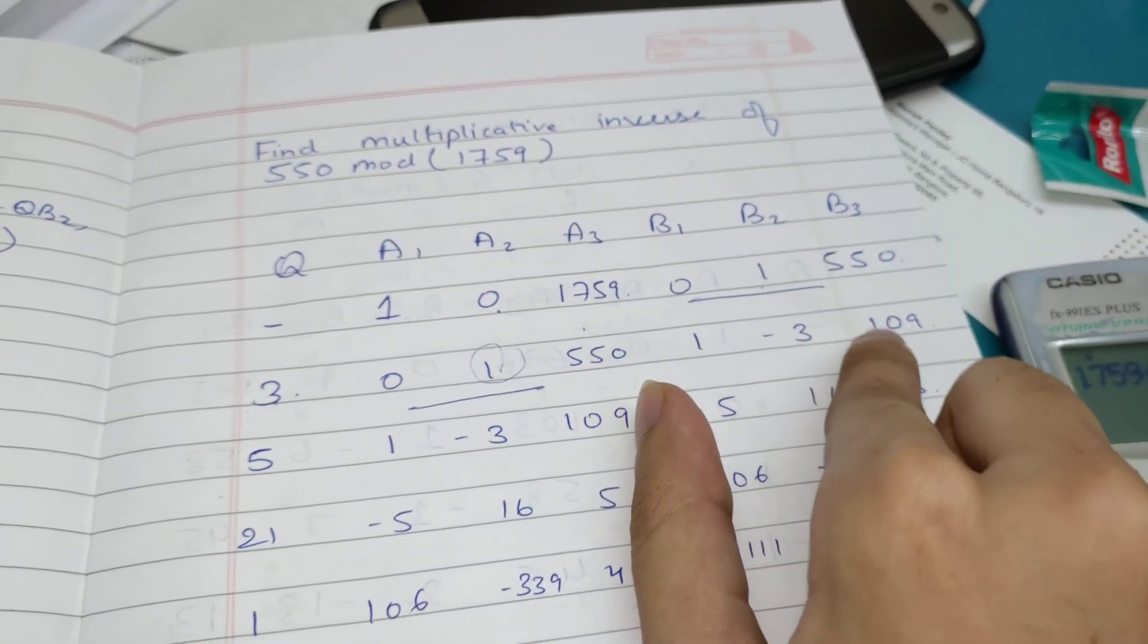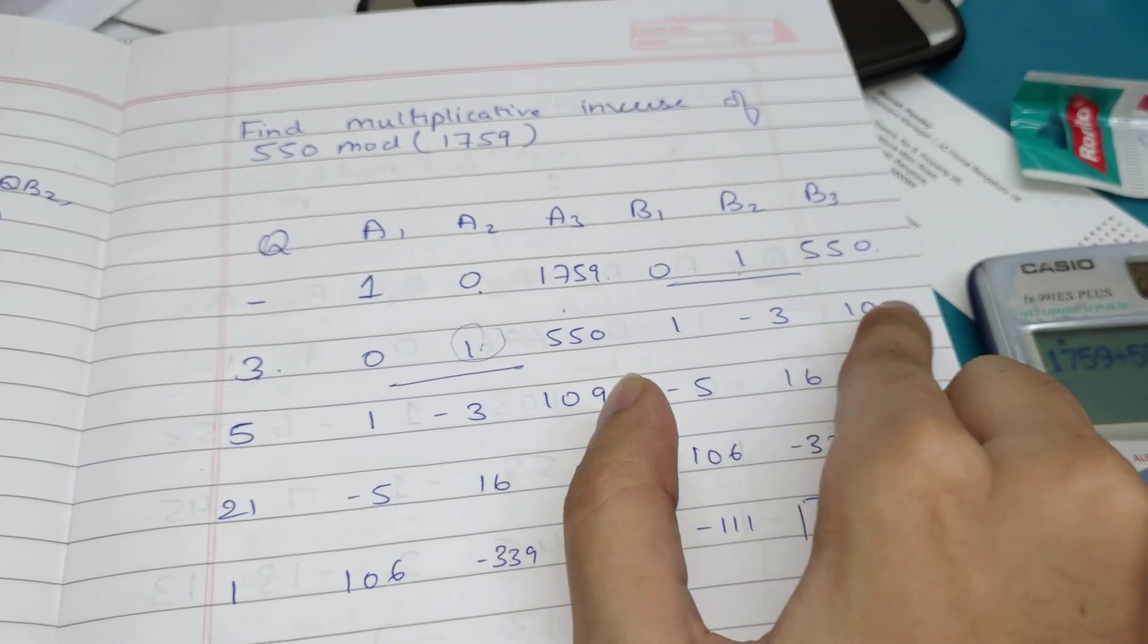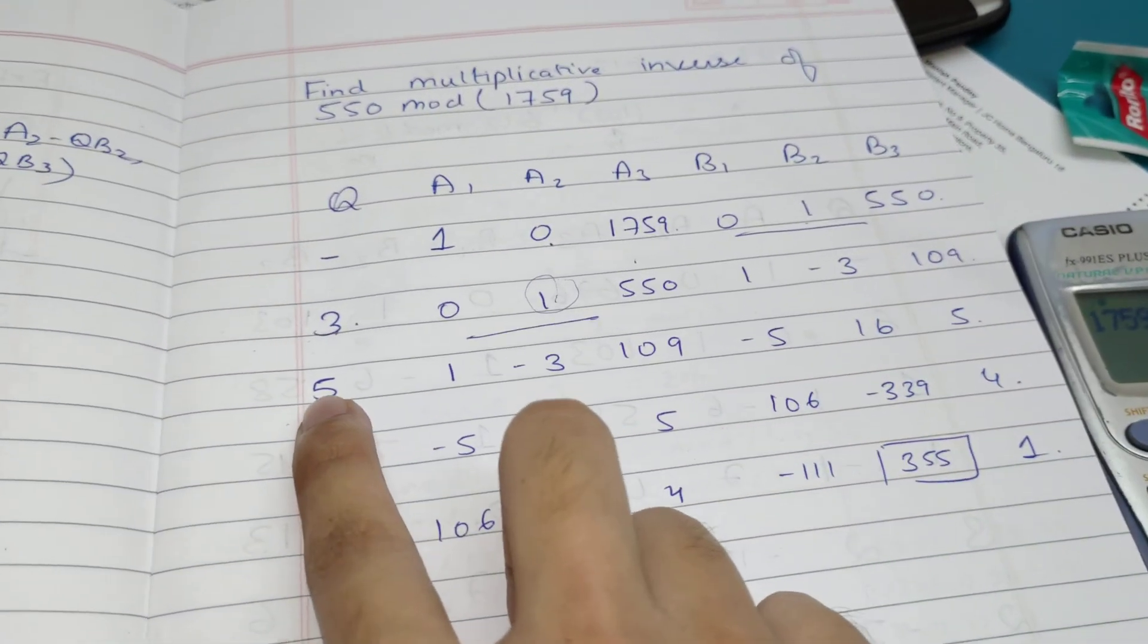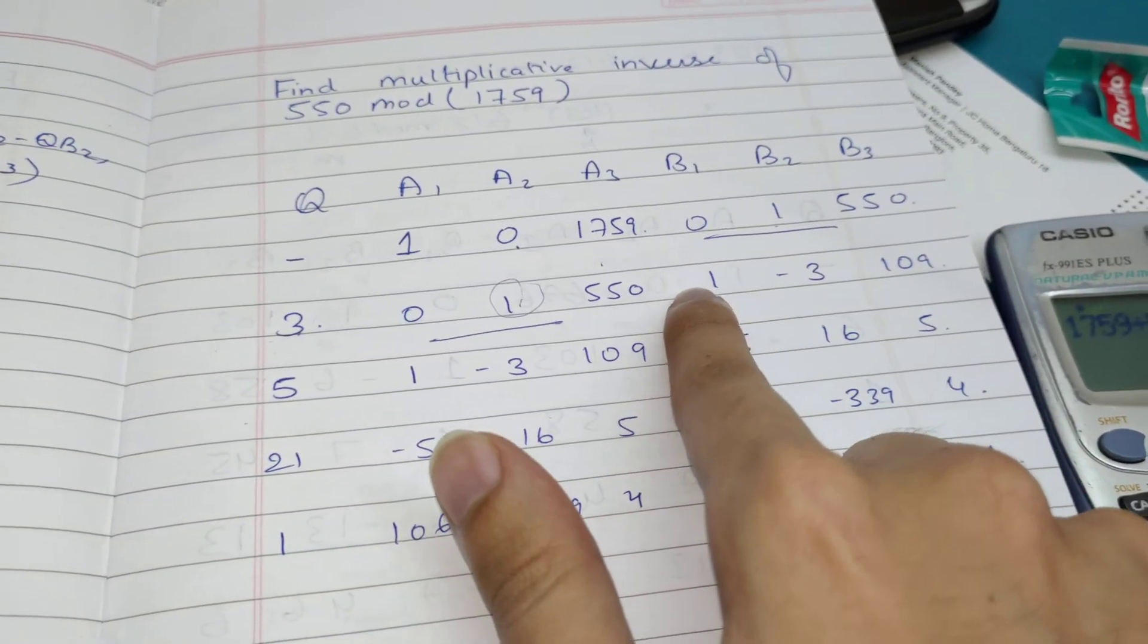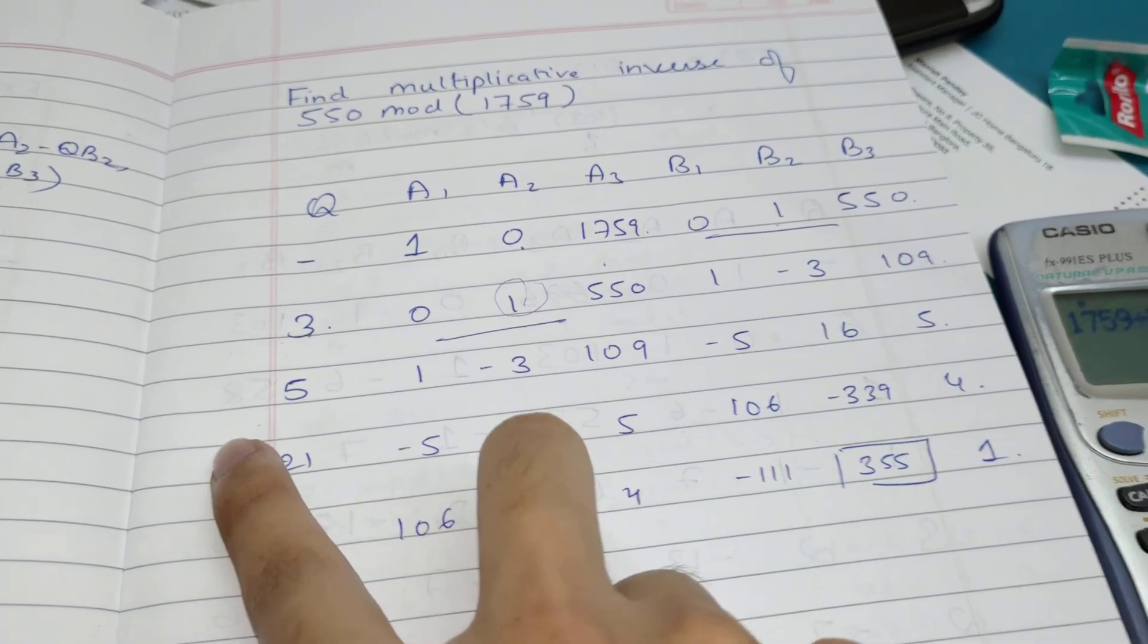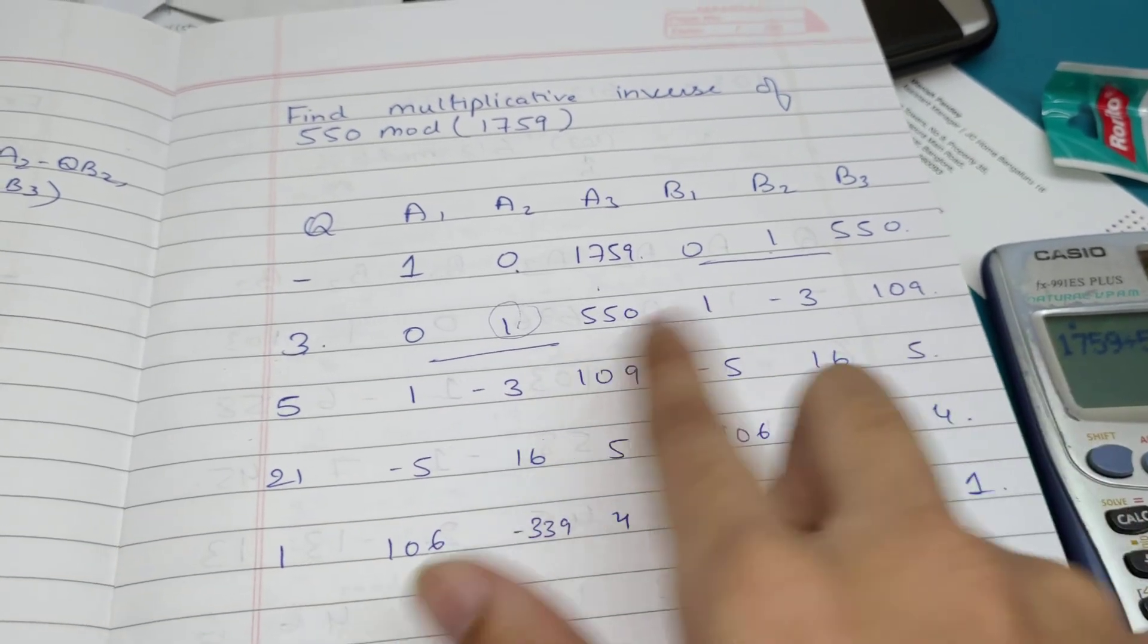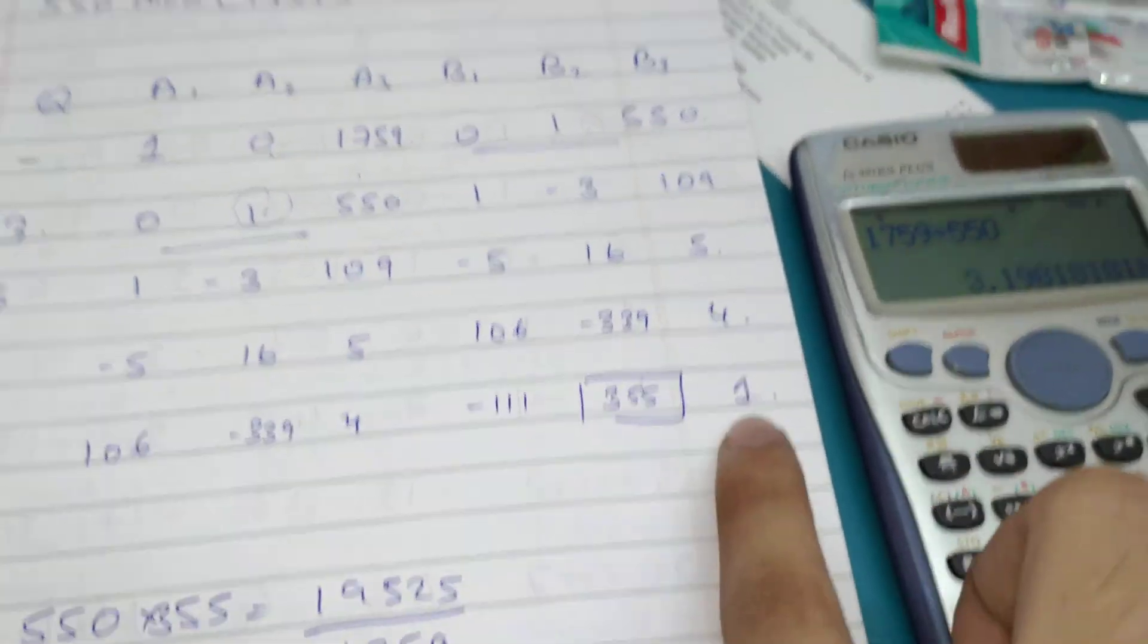Next, what you have to do: 550 divided by 109. Whatever value you get, don't consider the decimals - only what's left of the decimal you write here. Copy this here. Again the same process: 0 minus 5 into 1, so -5. Then 1 minus 5 into -3: minus minus is plus 15 plus 1 equals 16. Similarly, keep going. How do you end? Whenever you...